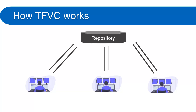When a developer commits changes, all the code changes made in his local copy will be sent back to the repository automatically. This is how the centralized version control system works.